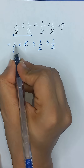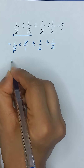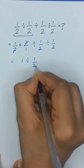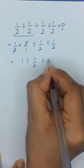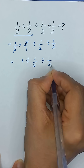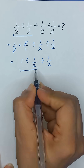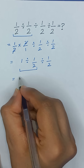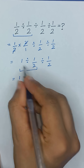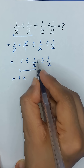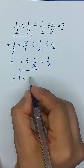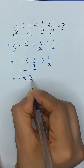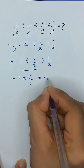Now 2 and 2 will cancel out, and it will give us 1 divided by 1 divided by 2 divided by 1 divided by 2. Now we will solve these two terms using the same steps: divide will change into multiply and we will take the reciprocal of this fraction, so it will become 2 divided by 1 divided by 1 divided by 2.